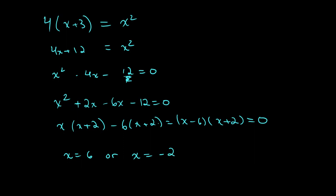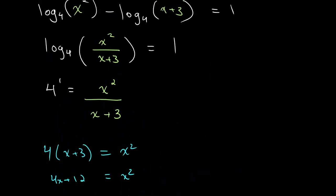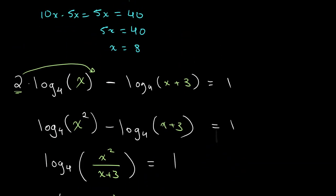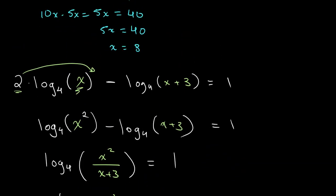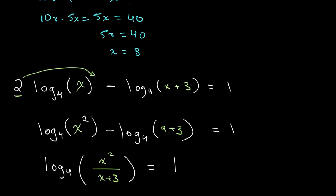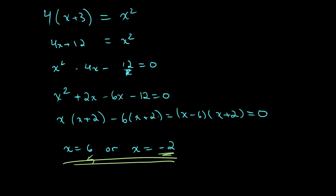Now before we definitively say that this right here is our final answer, we need to look back and make sure that they can both be plugged into our equation. So if we plug 6 in, we see that it checks out because over here there's no issue, it can be applied. And over here as well we can take log base 4 of 9, we can also take log base 4 of 6. However, if we want to use the value of negative 2, that does not work out. Because we cannot take log base 4 of negative 2 since we are not allowed to take negative logs. So therefore negative 2 is not a viable option for us.